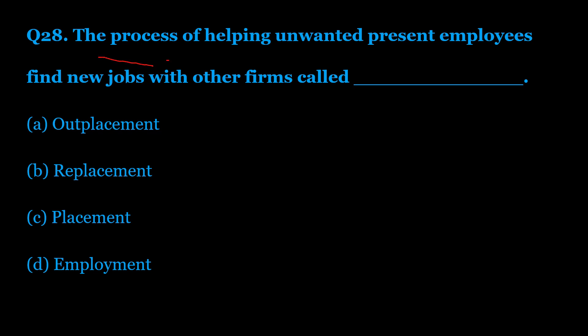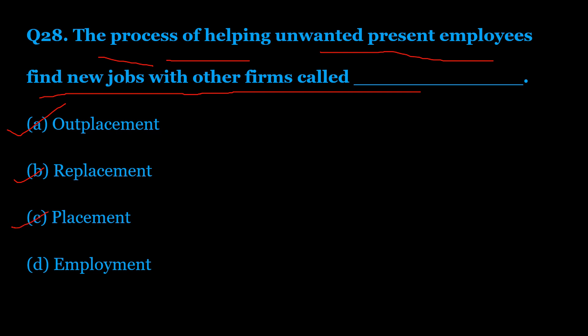Question number 28: Finding present unwanted employees for new jobs with other firms is called — Option A: outplacement. Option B: replacement. Option C: placement. Option D: employment. The correct answer is Option A — outplacement. This is the process of finding jobs for present unwanted employees with other firms.